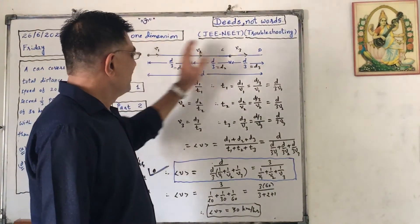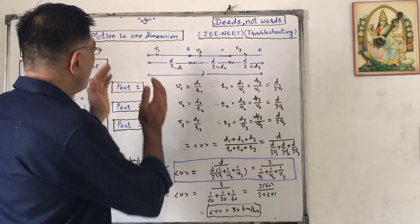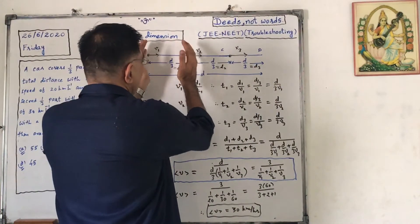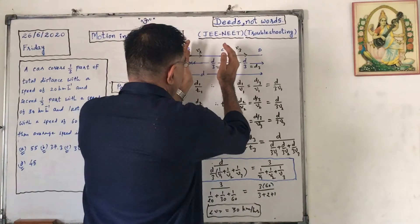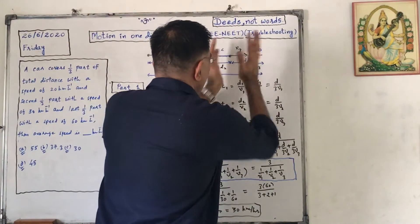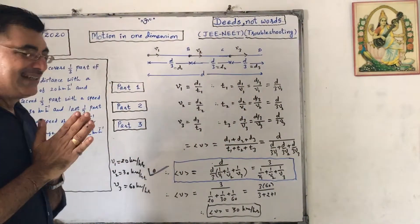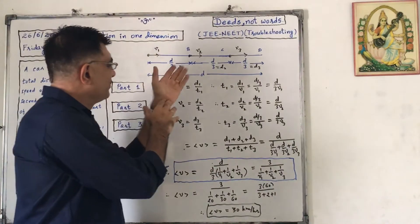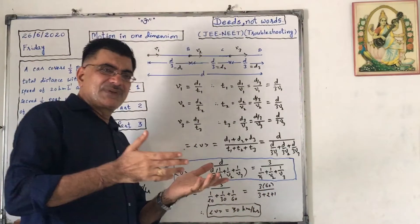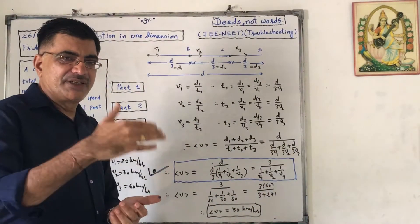The total distance is D. One third part is D by 3, second one third part is again D by 3, and third one third part is also D by 3. Let us denote it by D1, D2, and D3 and times T1, T2, and T3 respectively.